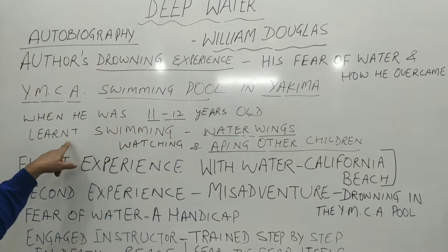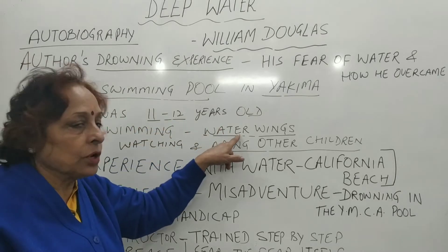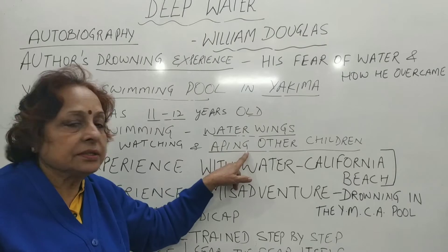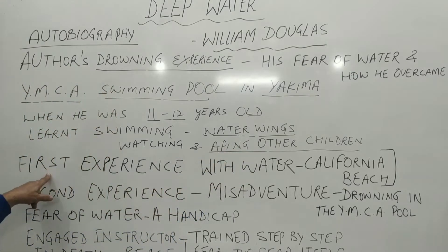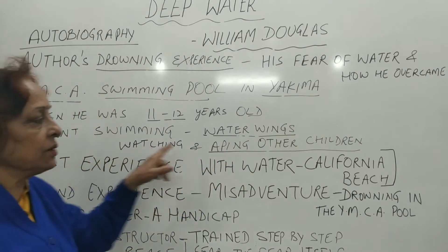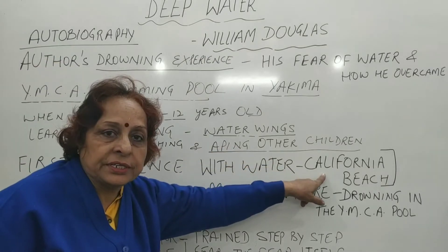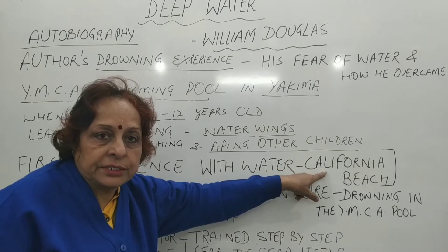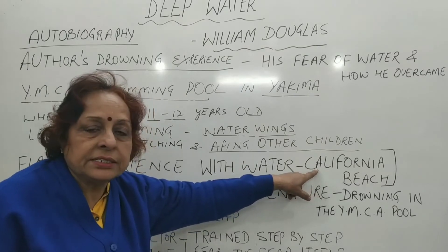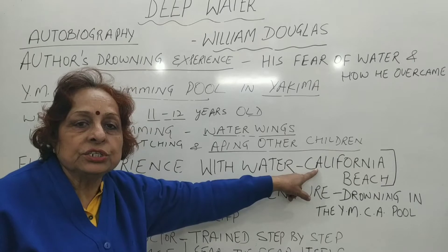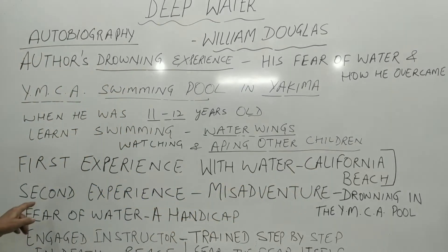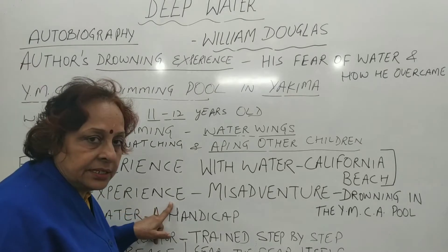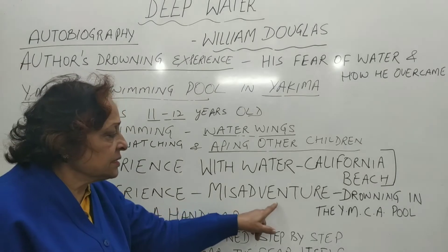How did he begin to learn swimming? With the help of watching and imitating the other children. What was his first experience with water? It was at California beach. What happened after this? He had an aversion to water — he disliked water. What does he term his second experience as? He terms it as the misadventure.